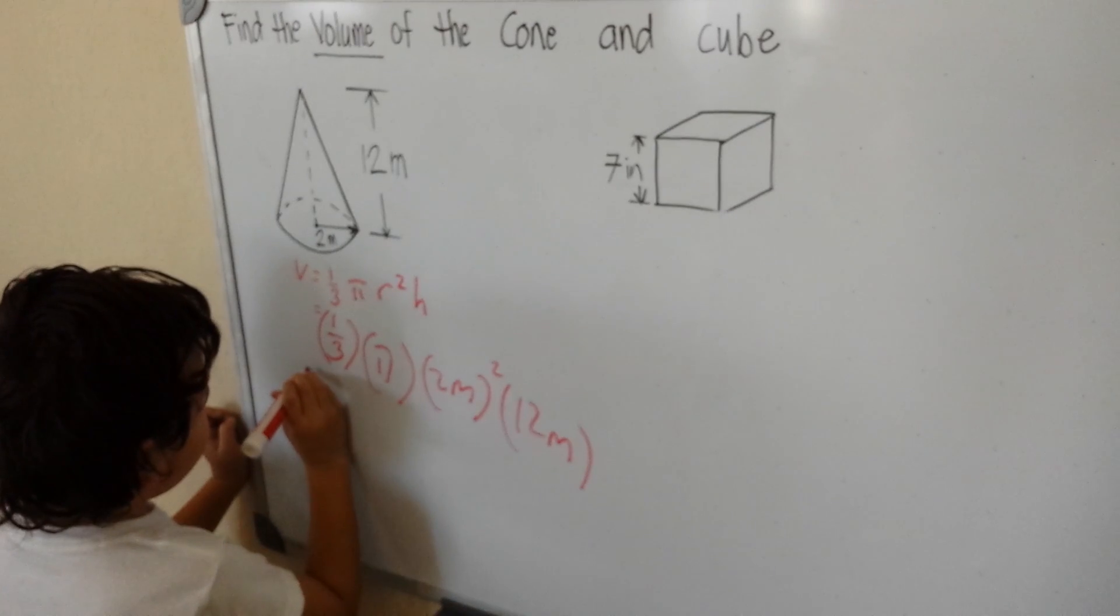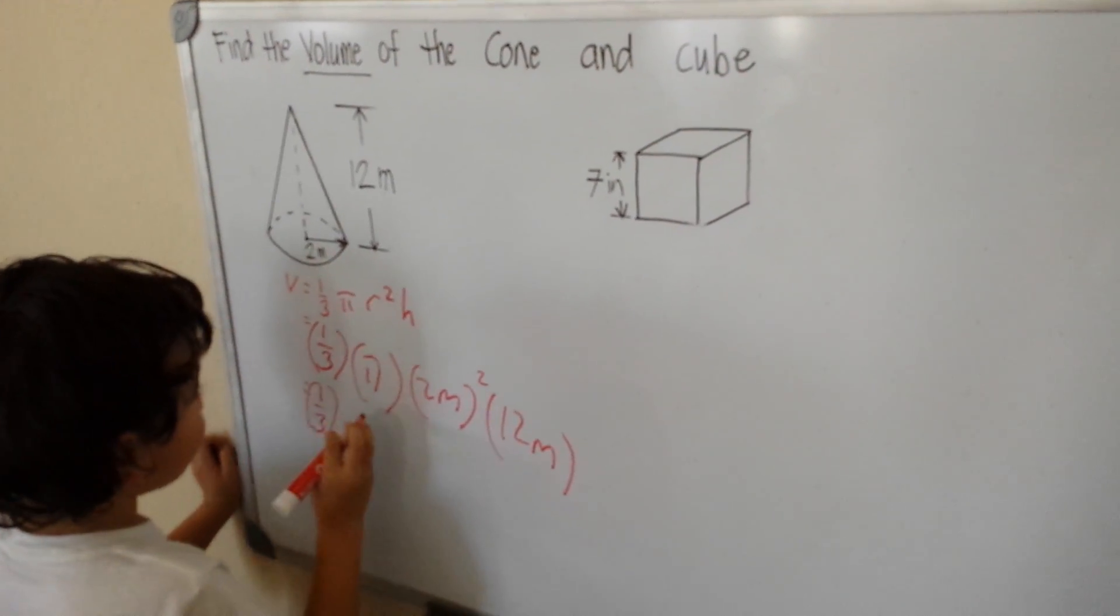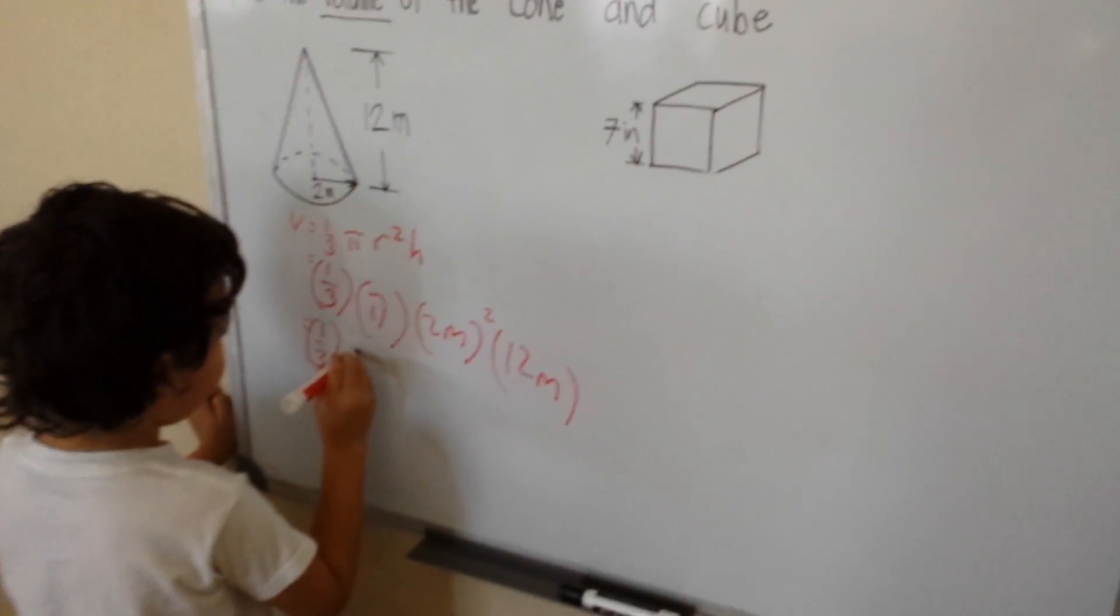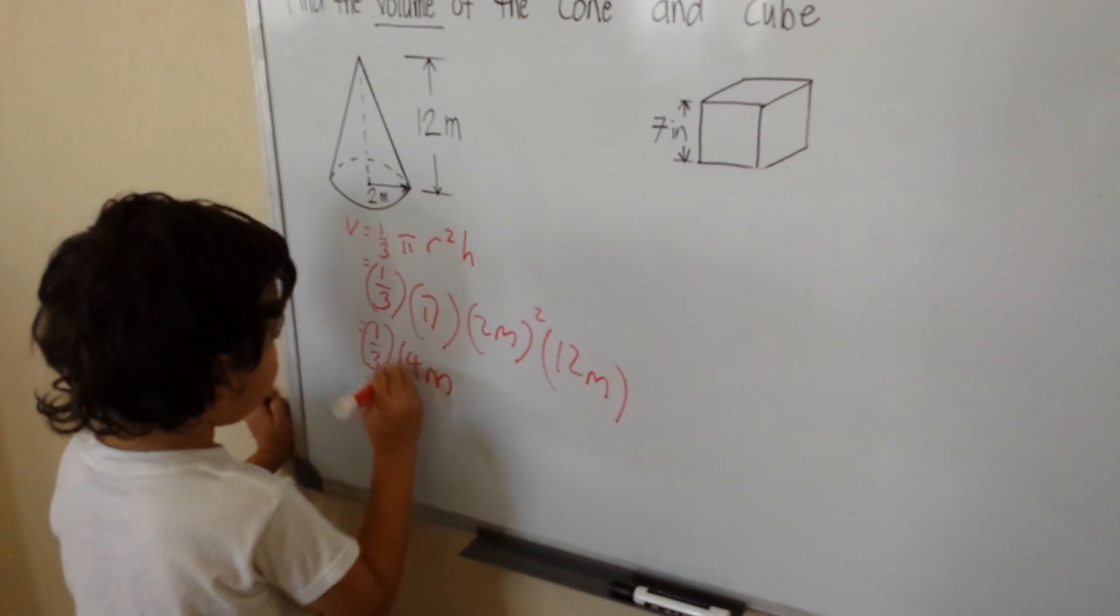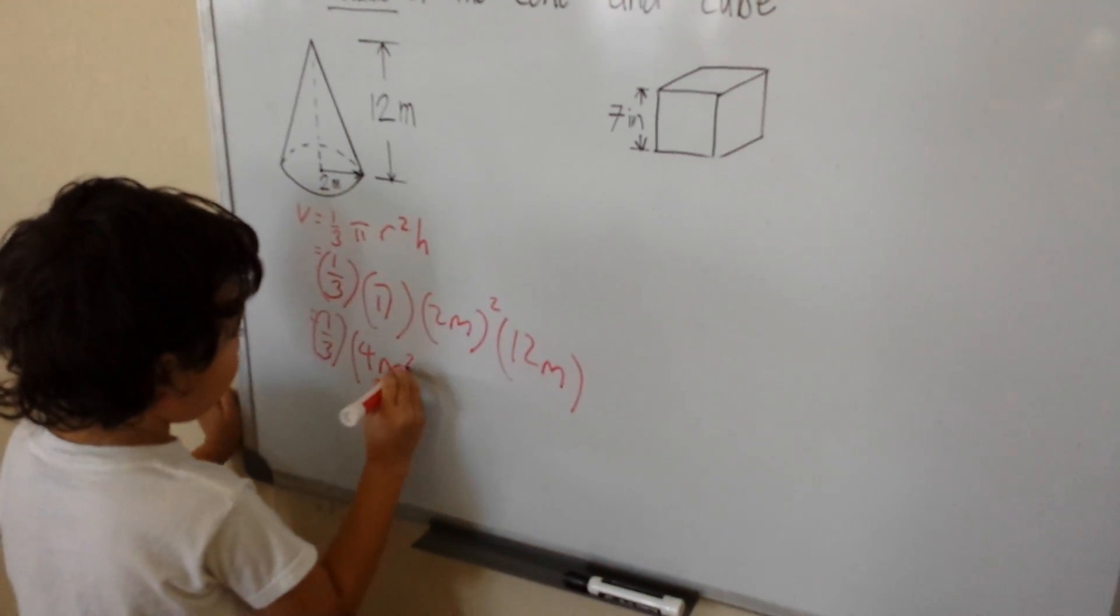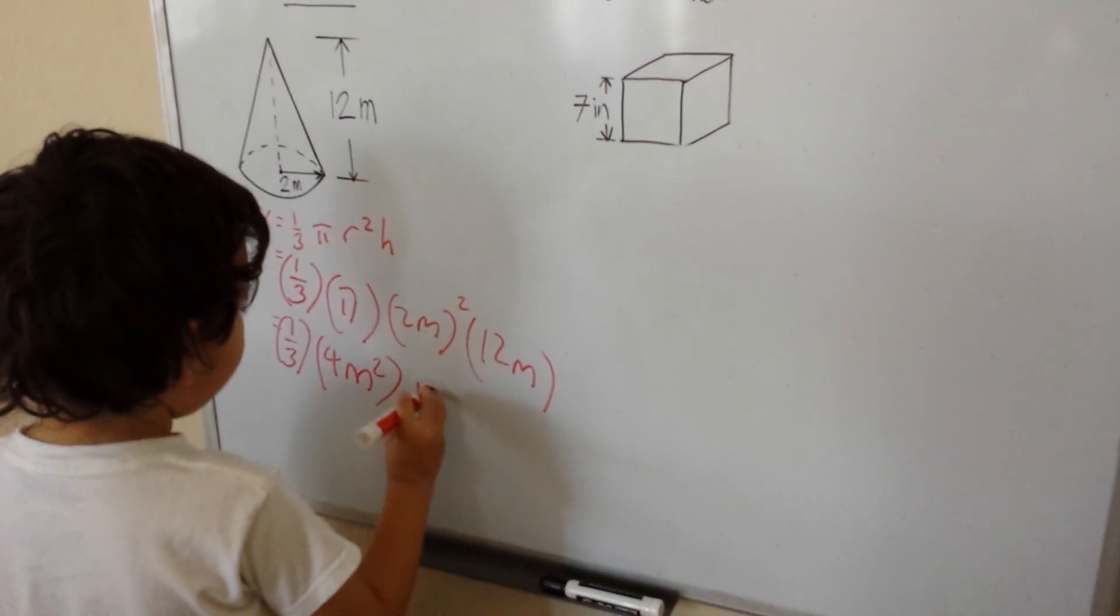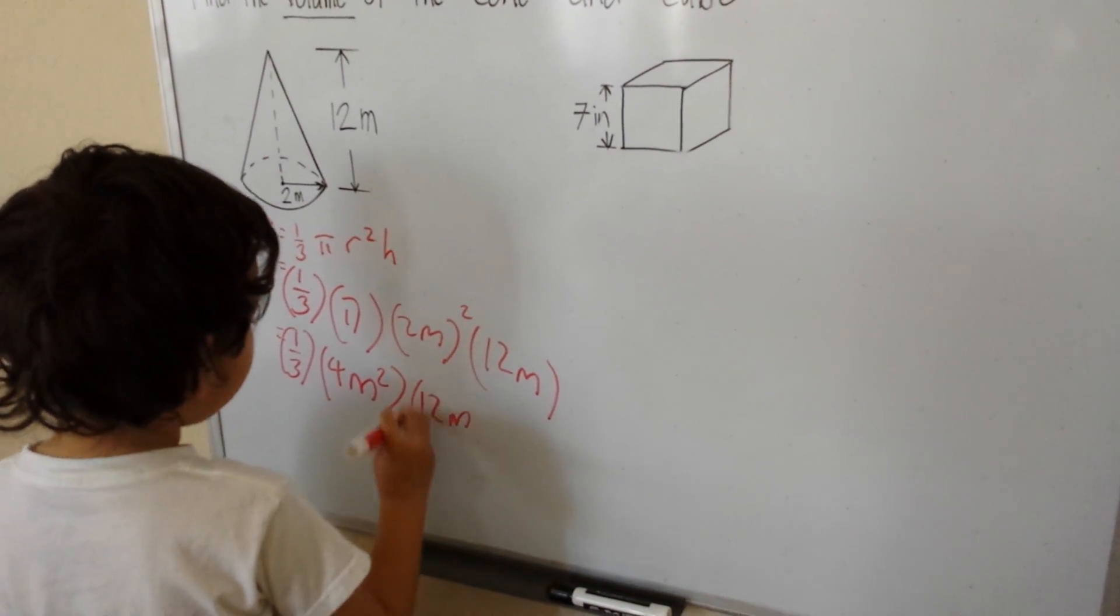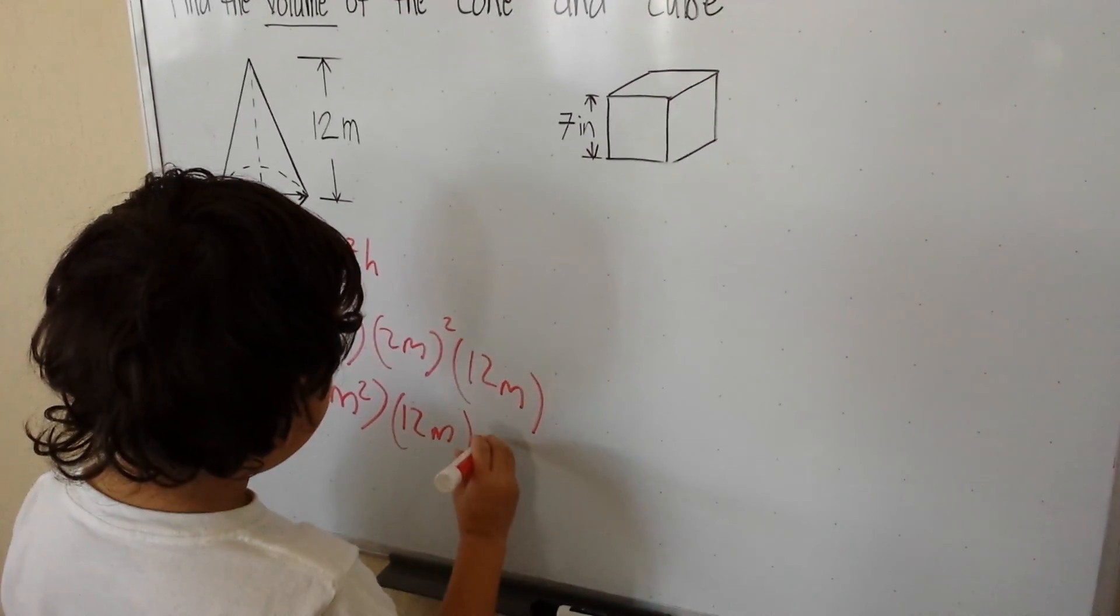So we copy the 1 over 3 again and then put it in the bracket, and then 2 times 2 will be 4 meters, 4 meters squared, and then 12 meters, and then my pi.